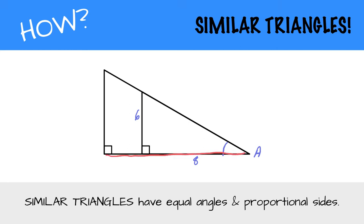If you do tangent A, which is opposite over adjacent, you are going to get 9 over 12, which equals 0.75.